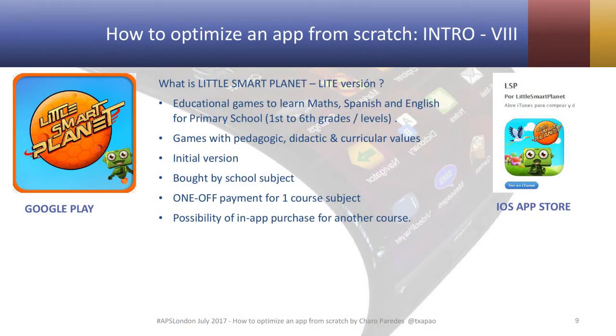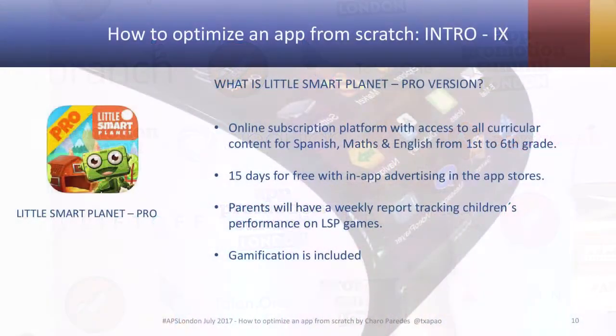You can play alone or you can challenge a friend. Little Smart Planet has different business models. They started with a light version, which was a one-off payment per school course, and all these games have a pedagogical and didactic value. There is also the possibility of buying more courses. Little Smart Planet evolved into an online subscription platform — the pro version — where students get 15 days for free with in-app advertising.